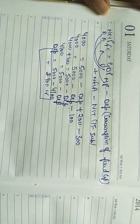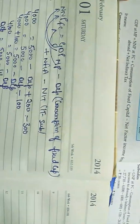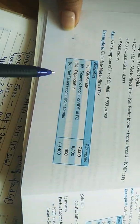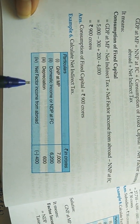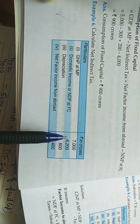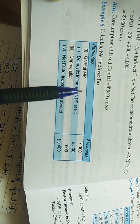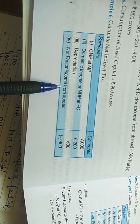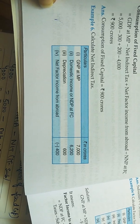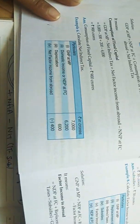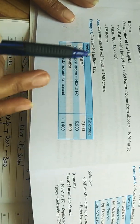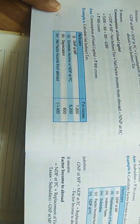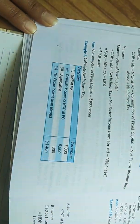Now the next question: calculate net indirect taxes. GNP at MP is given as 7000, domestic income (NDP at FC) is 6200, depreciation is 600, and net factor income from abroad (NFIA) is minus 400. We need two symbols — GNP at MP and NDP at FC — so we write GNP at MP equals NDP at FC.